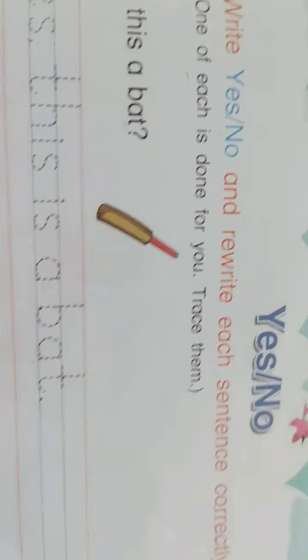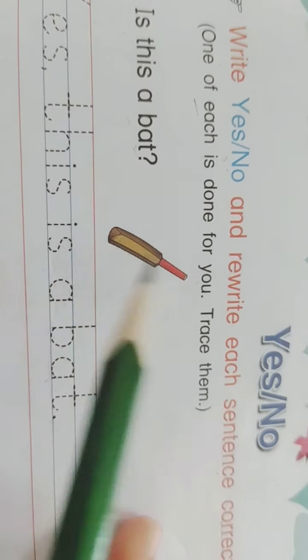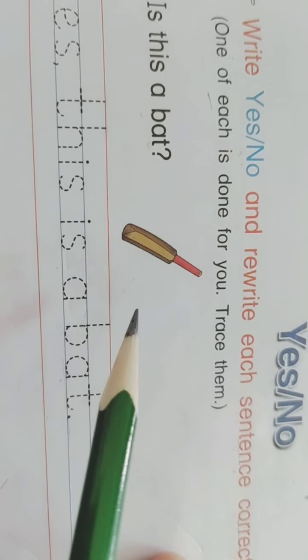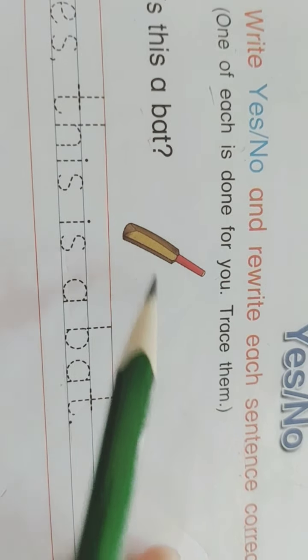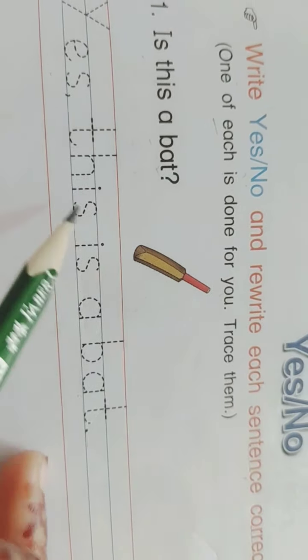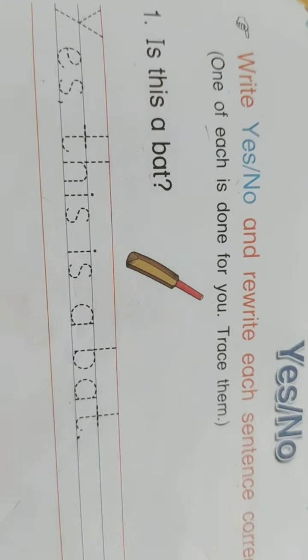Yes or no. Write yes, no and rewrite each sentence correctly. They have given one example for you to understand. Okay, is this a bat? You can see here. Yes, yes. They are asking, is this a bat? Yes, it is bat or no? Yes or no? Yes. So you have to write, yes, this is a bat.